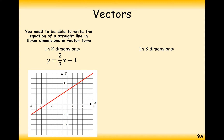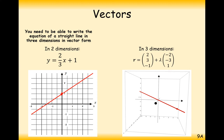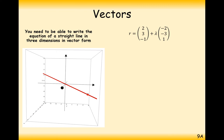For example, y equals 2/3 x plus 1: 1 is your starting position and we're changing at a rate of 2/3. For every x we go to the right by 1. Similarly, here we're starting at position (2, 3, -1) and changing at a rate of (-2, -3, 1) as lambda changes. As you can tell from this vector, when lambda equals 1 our line goes through the point (0, 0, 0).